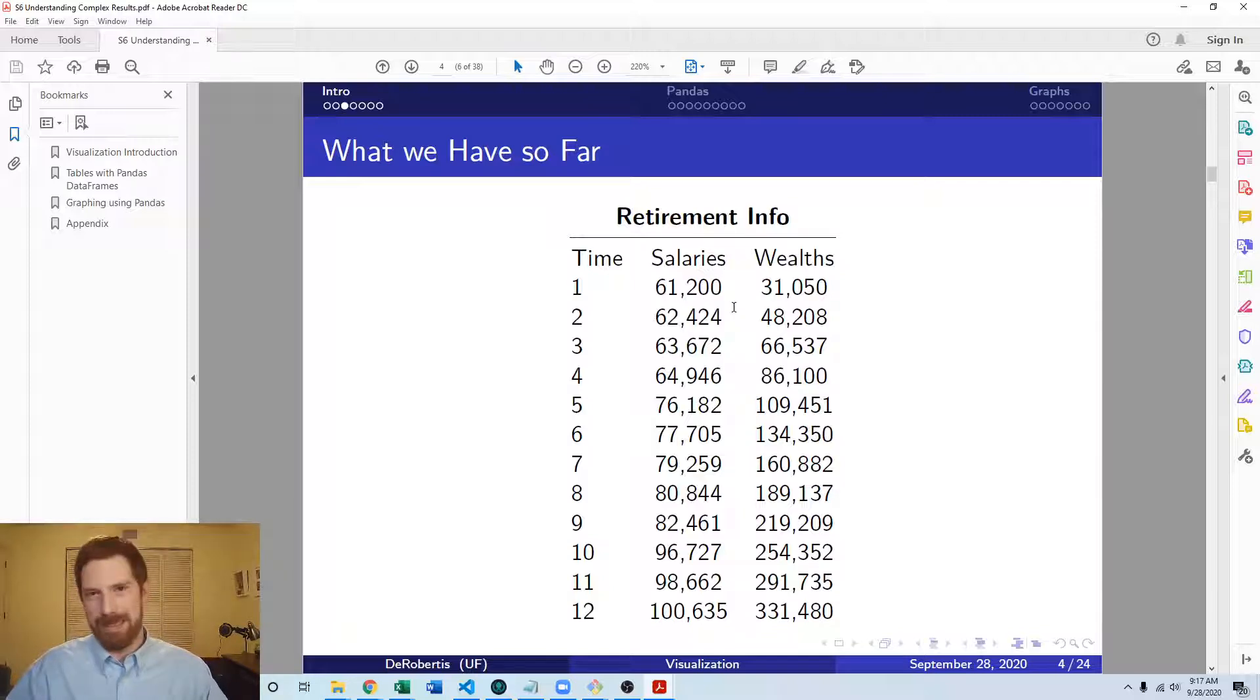You can definitely see that but it takes some time looking at the numbers to understand that. You can't just immediately glance at this and understand that every five years there's a promotion causing the salary to jump. You can see that if you look at the numbers one by one and identify these patterns, but it's not immediately obvious, and that's where visualization can be really helpful.